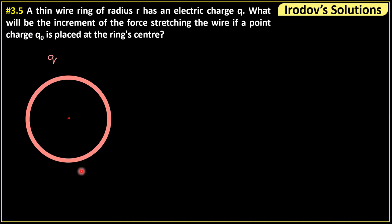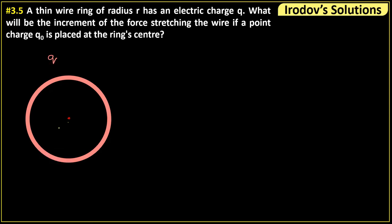This is a ring having charge Q. Because of this charge, at all points of the ring there will be an outward direction electric field, and because of that electric field all the little charges on the ring will feel an outward stretch. So this ring, due to its charge, is in a state of stretch — there will be a tension at any section. The two parts of that section would be pulling each other. Because of this charge there is already a tension. Now what happens if we put some additional charge q₀ at the center?